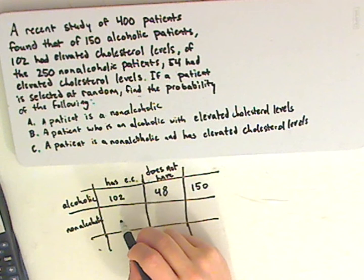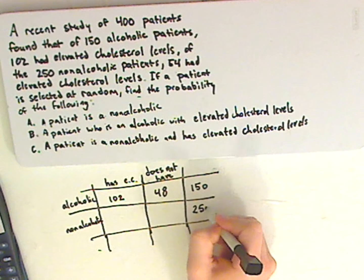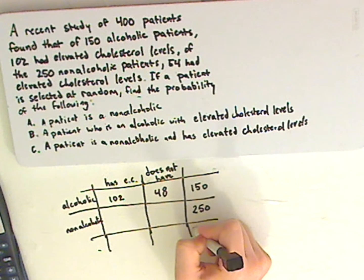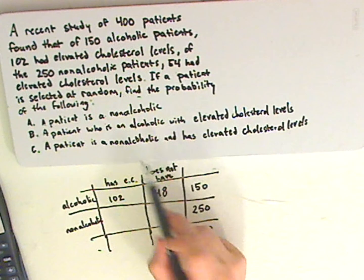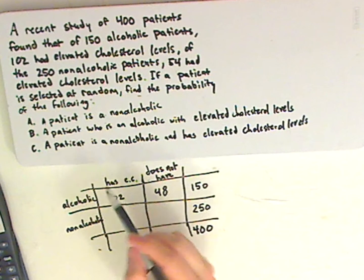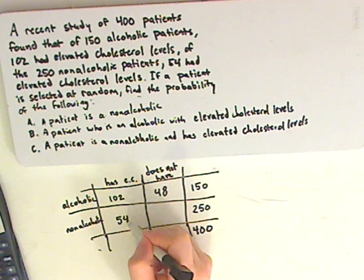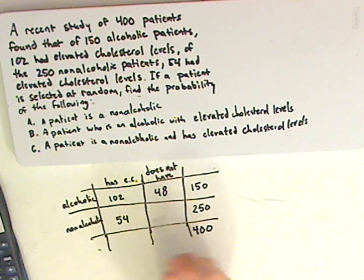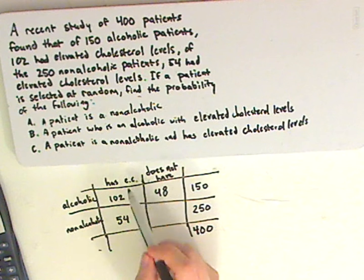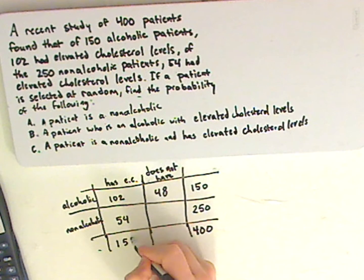And then you have 250 non-alcoholic patients, that would be a total of 400. 54 have elevated cholesterol. So those who have, out of the 400 patients, well, let me not get ahead of myself.